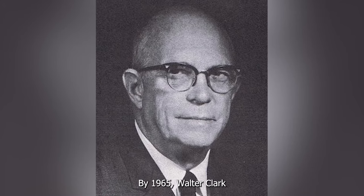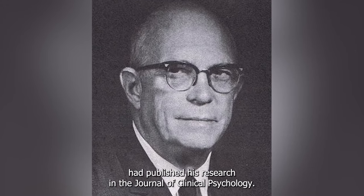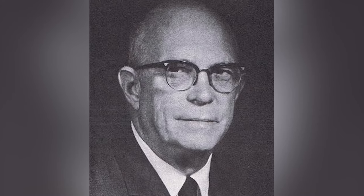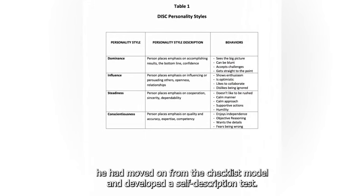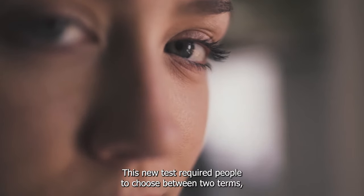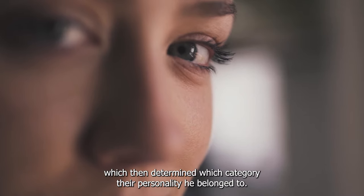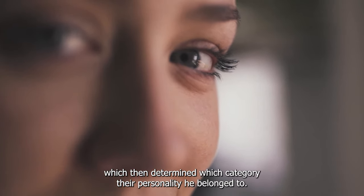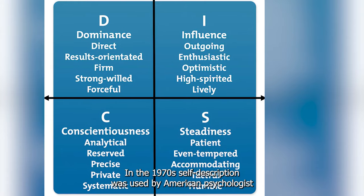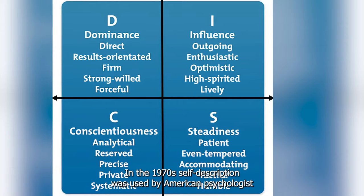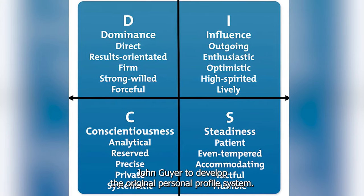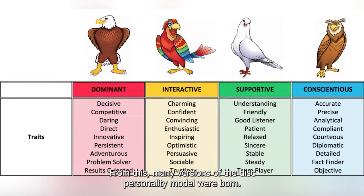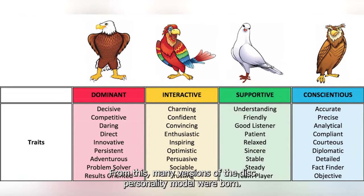By 1965, Walter Clark had published his research in the Journal of Clinical Psychology. By then, he had moved on from the checklist model and developed a self-description test. This new test required people to choose between two terms which then determined which category their personality belonged to. In the 1970s, self-description was used by American psychologist John Geyer to develop the original personal profile system. From this, many versions of the DISC personality model were born.